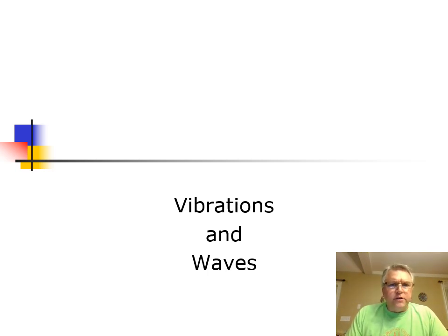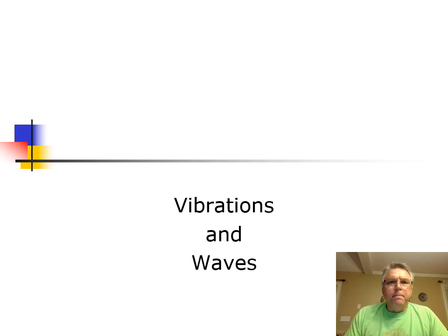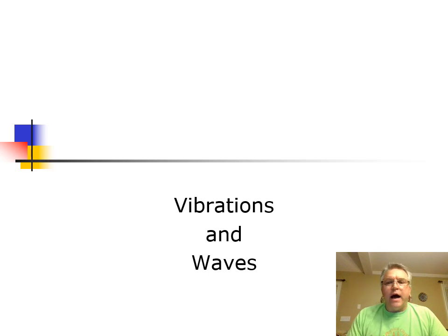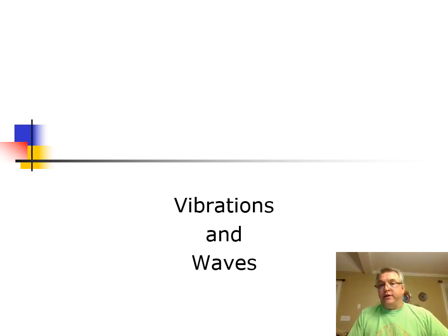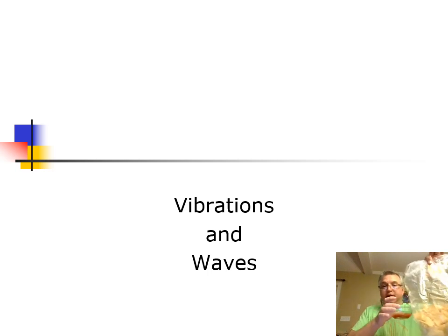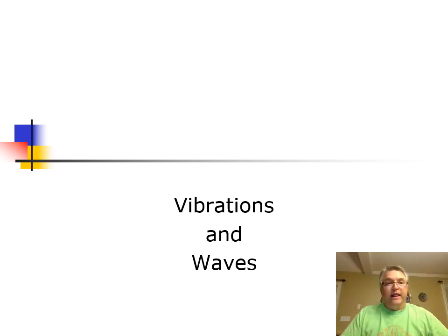In this unit, we're going to be looking at things like vibrations, simple harmonic motion, and pendulums. We're going to take a look at sound. We are going to explore light and the electromagnetic spectrum. And we are going to end with geometric optics — reflection and mirrors, and refraction and lenses. So let's get started.